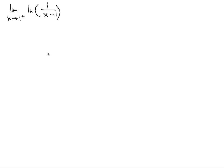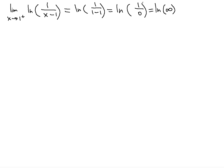We want to evaluate the limit of ln of 1 divided by (x minus 1). You can do it straightforward — plug in 1 and you get ln of 1 divided by (1 minus 1), which is ln of 1 over 0, which is ln of infinity. Since 1 over 0 is infinity, and ln of infinity is infinity — as x increases, ln x increases indefinitely — so the answer is infinity.